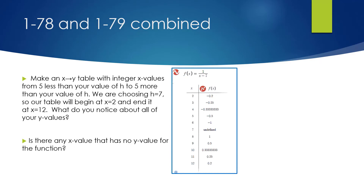Looking at the table, all integer values from 2 to 12 are listed. The y-values are all in fraction form except for negative one and one. I also like to include points like negative one-fifth and negative one-fourth because I prefer graphing with fractions rather than decimals.